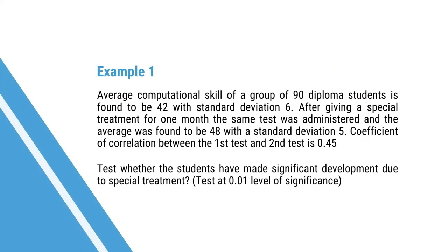Let us consider this with the help of an example. The average computational skill of a group of 90 diploma students is found to be 42 with a standard deviation of 6. After giving a special intervention of one month, the same test was administered and the average was found to be 48 with standard deviation 5. The coefficient of correlation between the first test and the second test is 0.45. Test whether the students have made significant development due to the special treatment at the 0.01 level of significance.